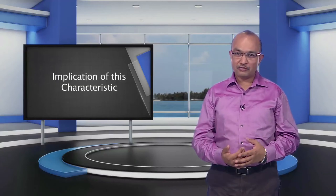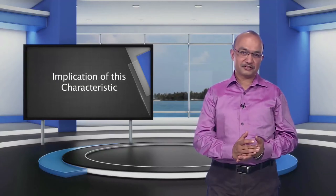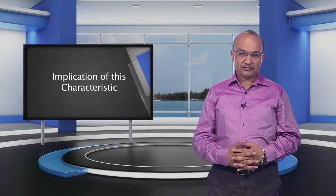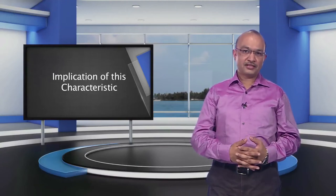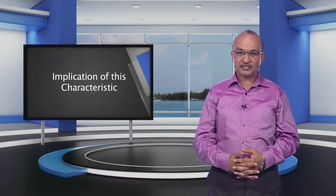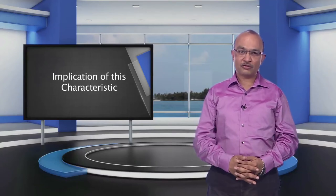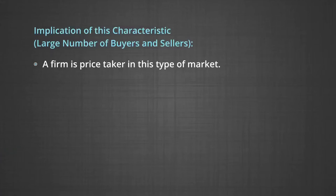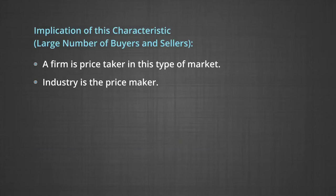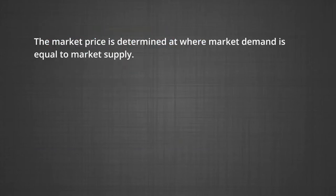The implication of this characteristic: since no single seller can have a significant share in the market, he cannot fix the price of the commodity on his own. We can say a firm is a price taker in this type of market. Whatever is the price fixed by the industry, the firm has to follow it. The market price is the price maker, determined at the point where market demand is just equal to market supply.